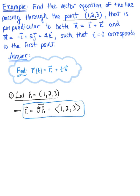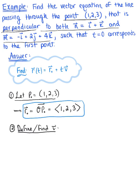Now the next thing that we want to do is define the parallel vector. So we need to define or find vector v. Now we have to be careful here. We have that this line that we're trying to find must be perpendicular to both vectors n and vector m.